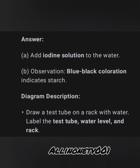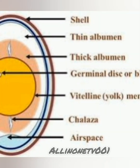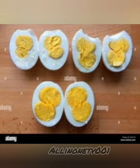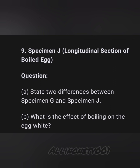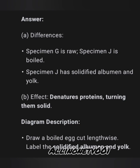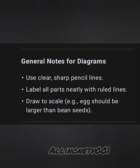Specimen J is a longitudinal section of a boiled egg, with the diagram and image shown on screen. Possible questions: A, state two differences between specimen G and specimen J; B, what is the effect of boiling on the egg white? Answer A: specimen G is raw, specimen J is boiled; specimen G has a liquid albumen and yolk, the reverse is the case for specimen J. Answer B: boiling denatures the protein, turning it solid.